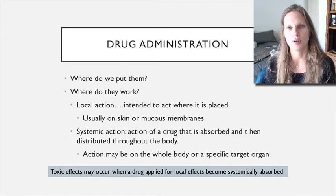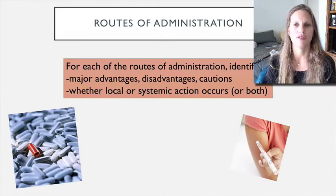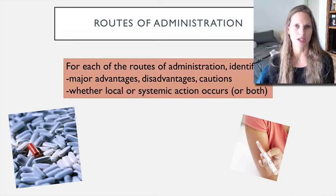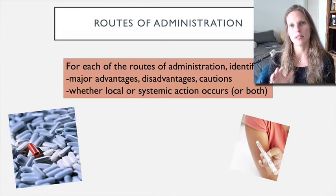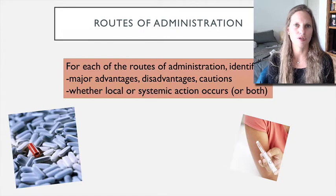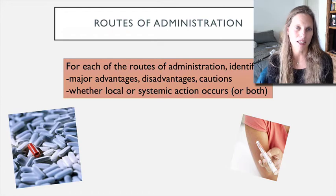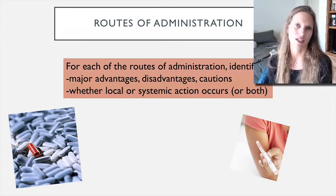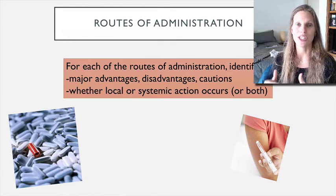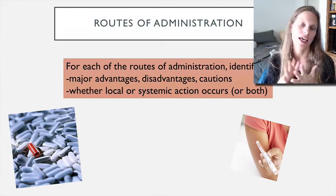For the most part this is straightforward, but where people go astray is with skin patches. Pain meds or oral contraceptives like an estrogen patch—when you place the patch on the skin, it's not acting at the skin. It's being absorbed via the skin, moving into the blood, and affecting a target elsewhere. The easiest way to think about this is: where's the target, where's the action? If it's anywhere other than where you've put the drug, then it's systemic.